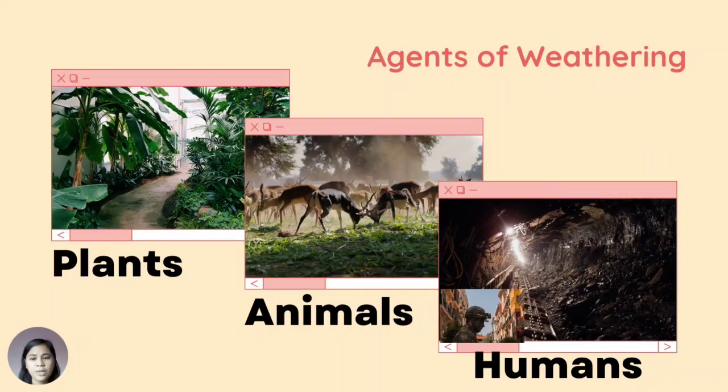We also have humans. Humans also contribute to the weathering of rocks. Subdivision developers use bulldozers to flatten mountains and hills to build houses. Some construction workers use jackhammers to break boulders of rocks as they repair roads. Mining companies extract stones or rocks from a quarry or an open pit mine. Some miners throw dynamites and other explosives on quarry sites to get more rocks or stones, which can trigger landslides.